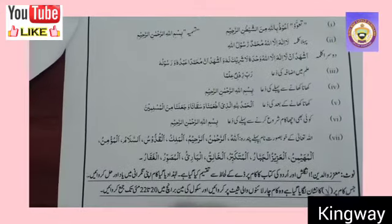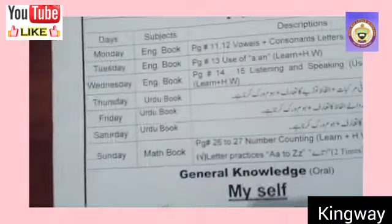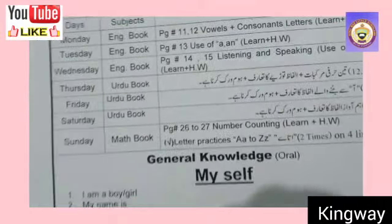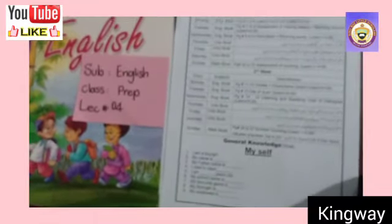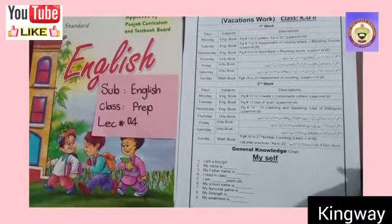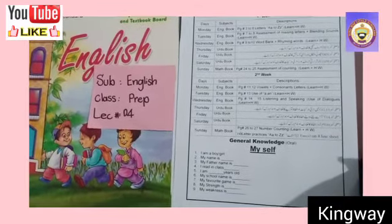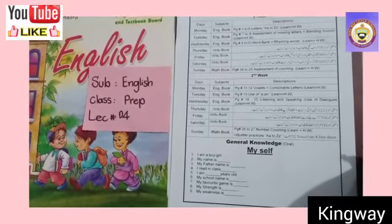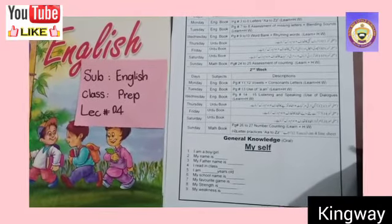You have to remember this again. Parents, please make sure your children remember the General Knowledge answers. Also write the English lesson in your books, solve it, and make an assignment sheet. You have to complete this work. The message will be sent to the assignment sheet and you will be able to do it during school. This is all for today.